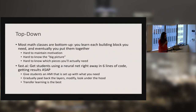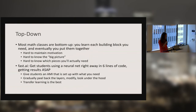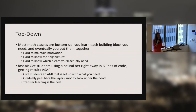Most math classes are bottom-up: you learn each building block and then eventually put them together. It's hard for students to maintain motivation with that, and it's hard to know the big picture or which pieces you'll actually need. So we try to get students using a neural net right away in six lines of code. We spend a lot of time refactoring our code to make it concise and modular. We give students an Amazon machine image set up with everything they need. Over time we do gradually peel back the layers and get to lower-level stuff, but it's always motivated by trying to improve performance or tackle a harder problem.